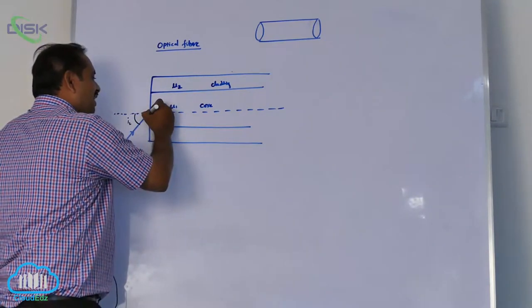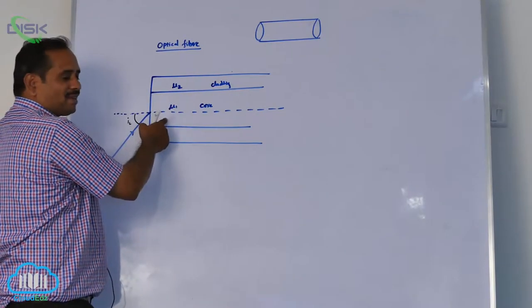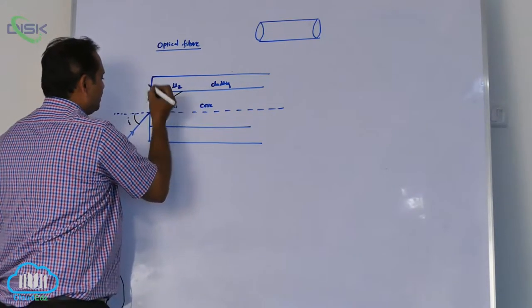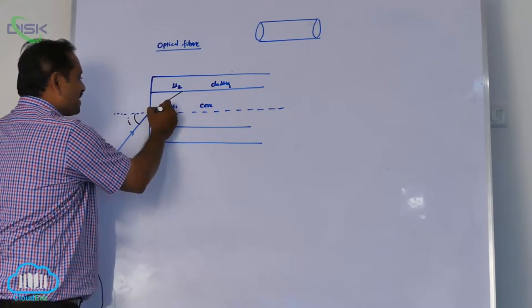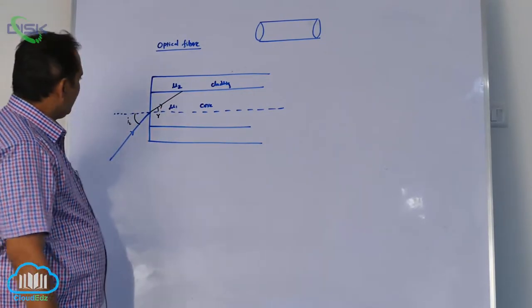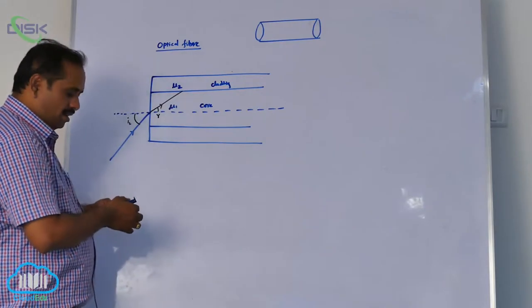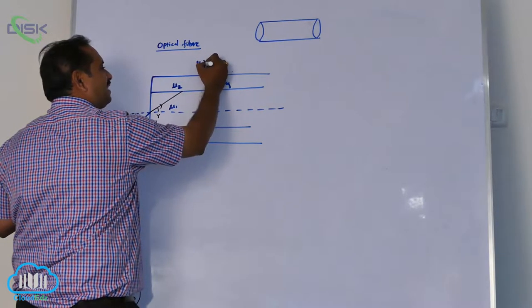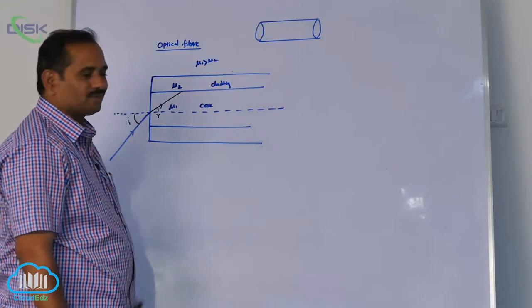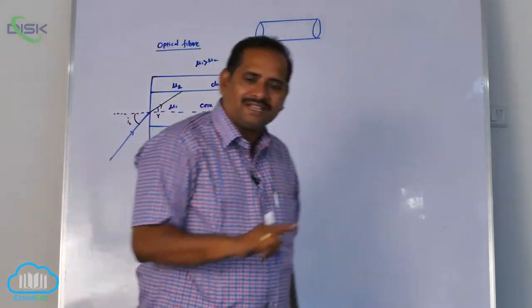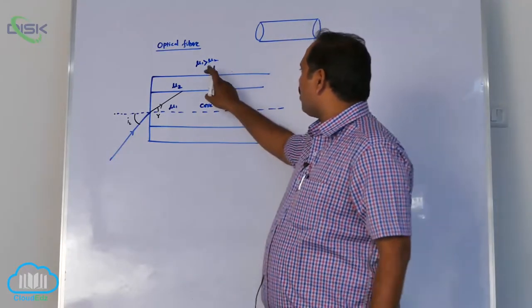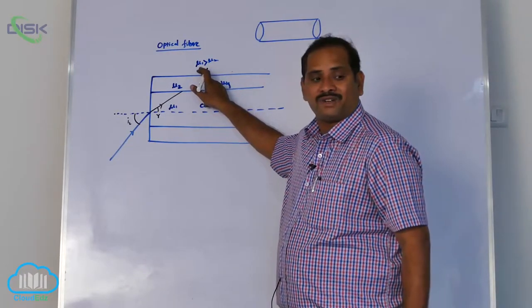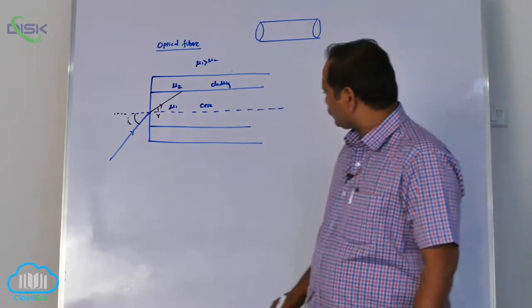Once it enters, air to medium, rarer to denser, then light moves towards the normal. This is angle of refraction R. Here, mu1 and mu2. I am going to define like this: mu1 is greater than mu2. Which medium has more refractive index, that is denser. Medium with more refractive index is denser. Mu1 is denser, mu2 is rarer.